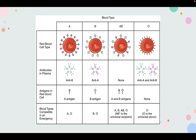Normally the body must be exposed to a foreign antigen before an antibody can be produced, but this is not the case for the ABO blood group. Individuals with type A blood, without any prior exposure to incompatible blood, have preformed antibodies to the B antigen that circulate in their blood plasma.